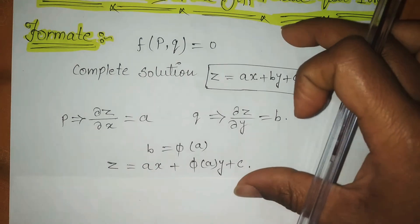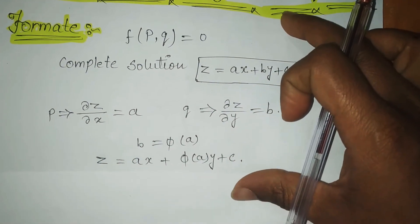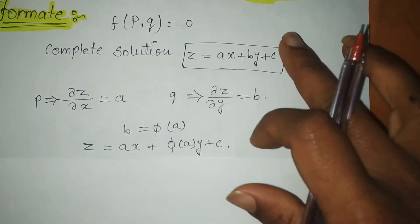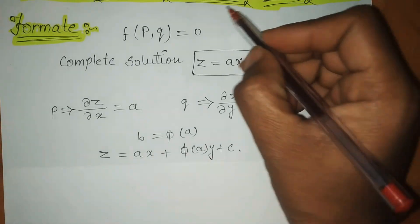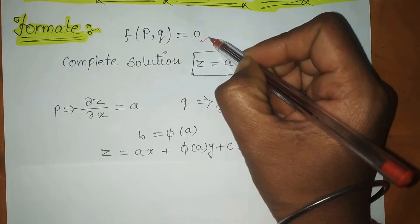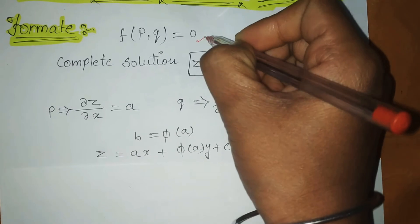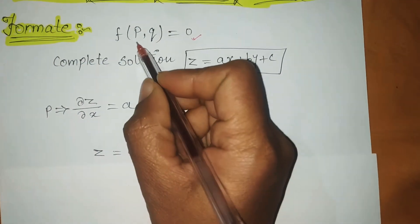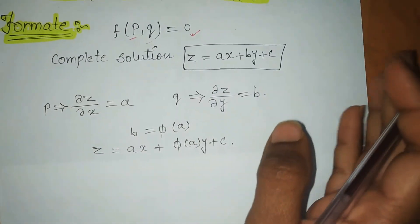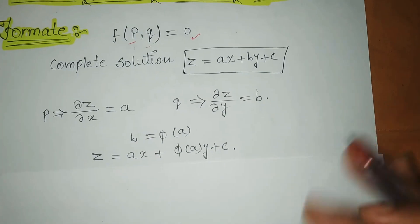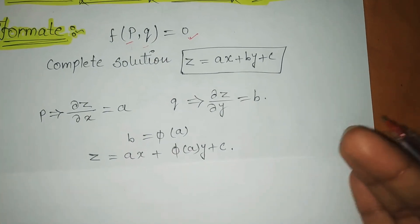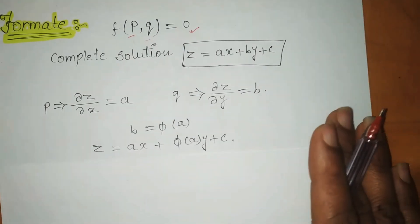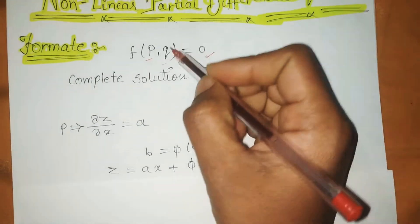This is the complete format of your first standard form. The first standard form question will involve just P and Q. If you are given the same form of question, you will only be asked about P and Q in that first standard form.